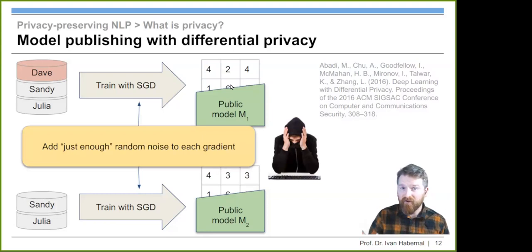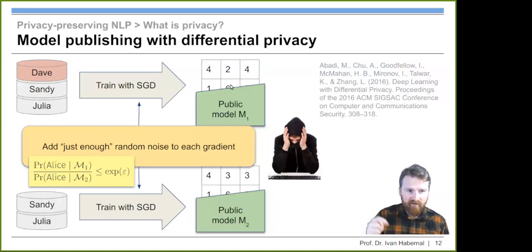For example, we have this dataset with Dave, Sandy, and Julia and we train a model. Then we remove Dave from the dataset. So we have something which we call a neighboring dataset. The other dataset is just one item smaller and we train another model. What we are getting are two models, M1 and M2. They have the same architecture, but the weights will be a little bit different. If you're a bad guy and you have access to the second model with Sandy and Julia, you might want to find out whether Dave was in the training data or not. That's what you want to prevent.